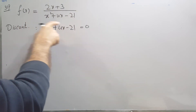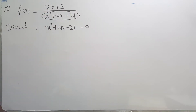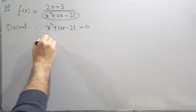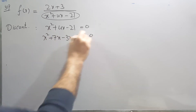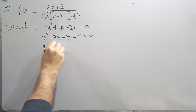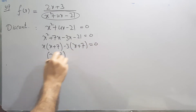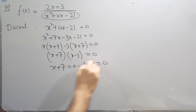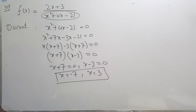For question 39, the discontinuity is when the denominator equals zero. Factorizing using the first-and-last rule: we split the middle term as plus 7x minus 3x minus 21, giving x(x plus 7) minus 3(x plus 7) equals zero, so (x plus 7)(x minus 3) equals zero. This means x equals negative 7 and x equals 3, so there are discontinuities at two points.